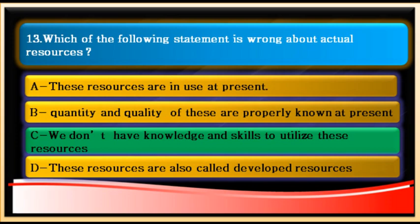Question number thirteen: which of the following statements is wrong about actual resources? Option A — these resources are in use at present — is correct. Option B — quantity and quality are properly known — is also correct. Option D — these are also called developed resources — is also correct about actual resources.